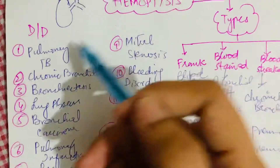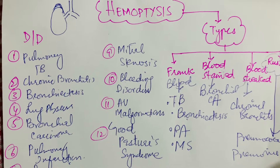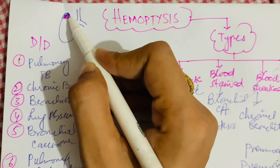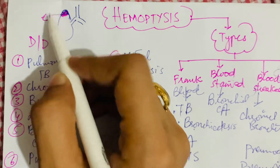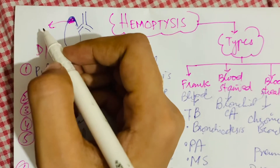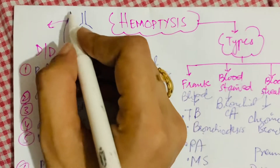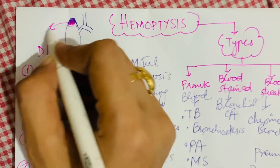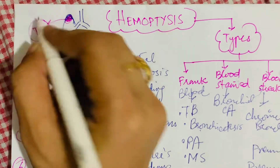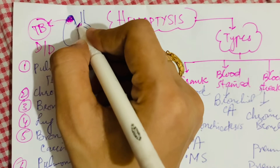Now, what are the differential diagnoses of hemoptysis? I am showing a diagrammatic picture to help remember the diagnoses. The most common cause is pulmonary tuberculosis. The first cause of hemoptysis is TB, followed by chronic bronchitis.